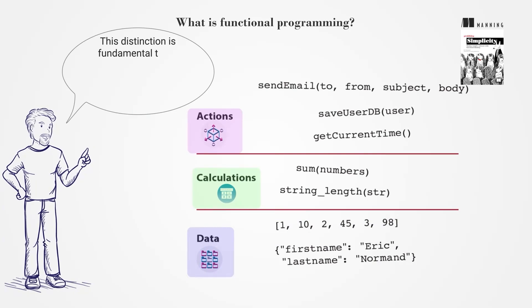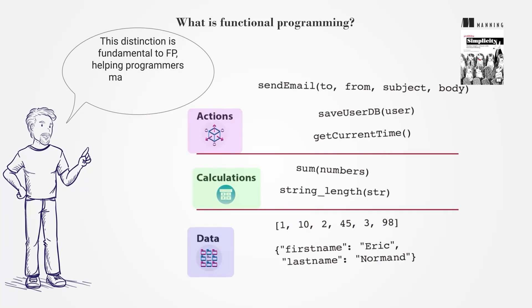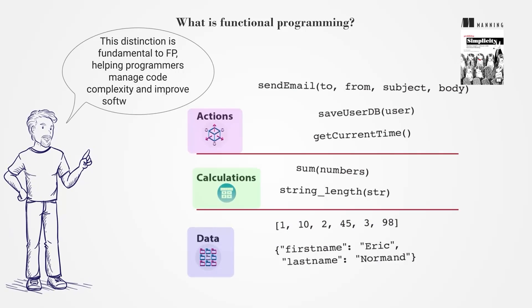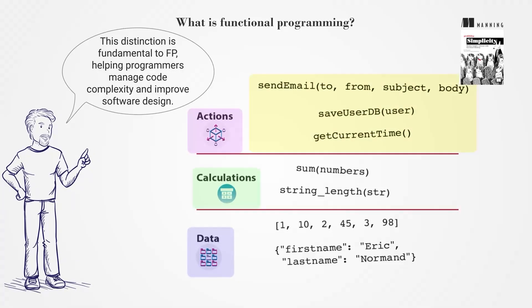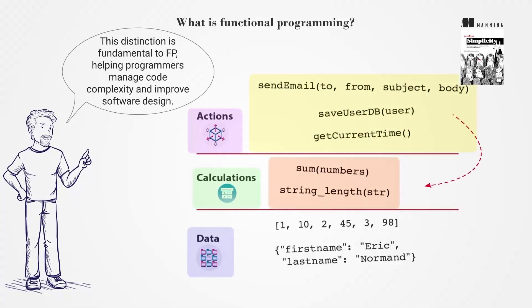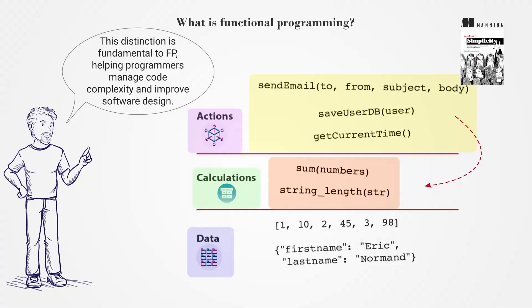This distinction is fundamental to FP, helping programmers manage code complexity and improve software design by reducing the amount of code in actions, moving it to calculations, which are easier to work with.